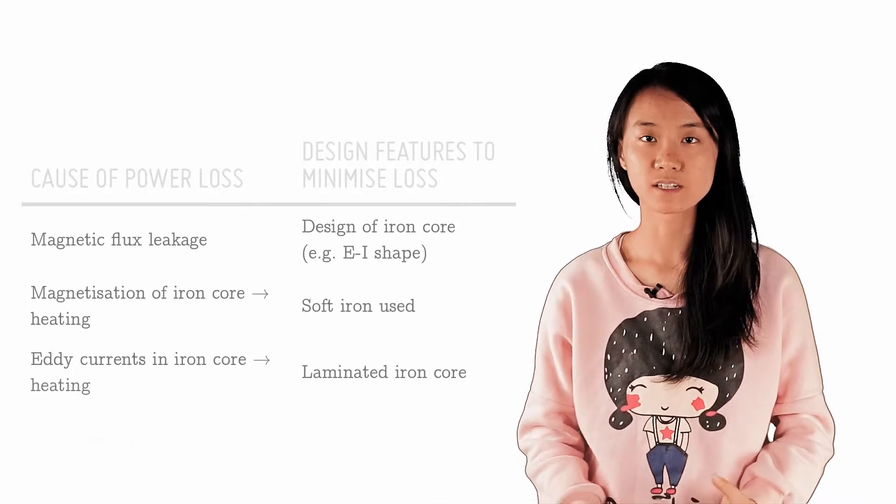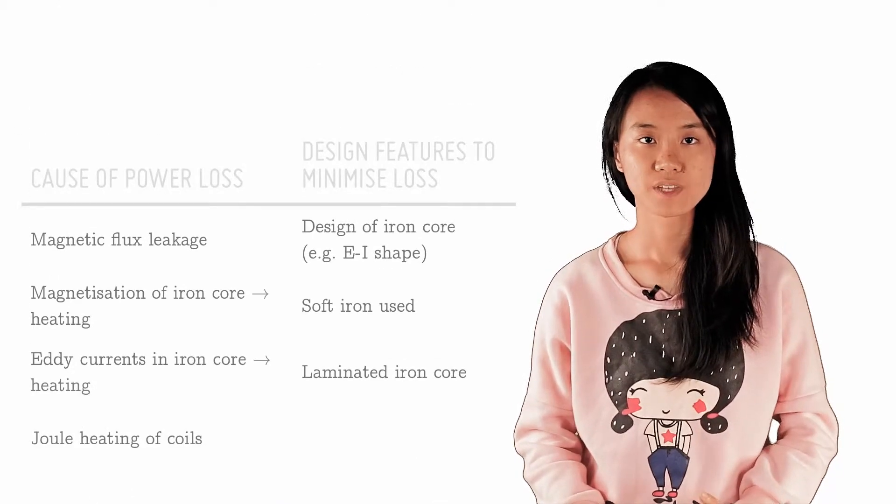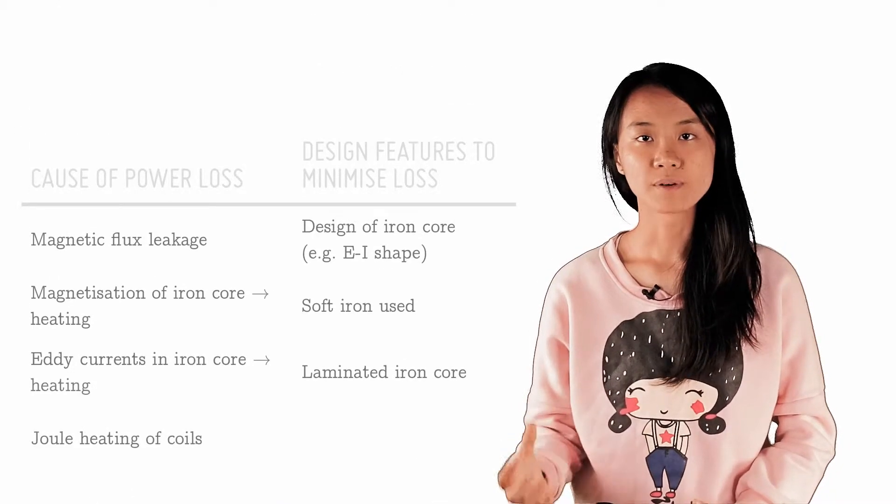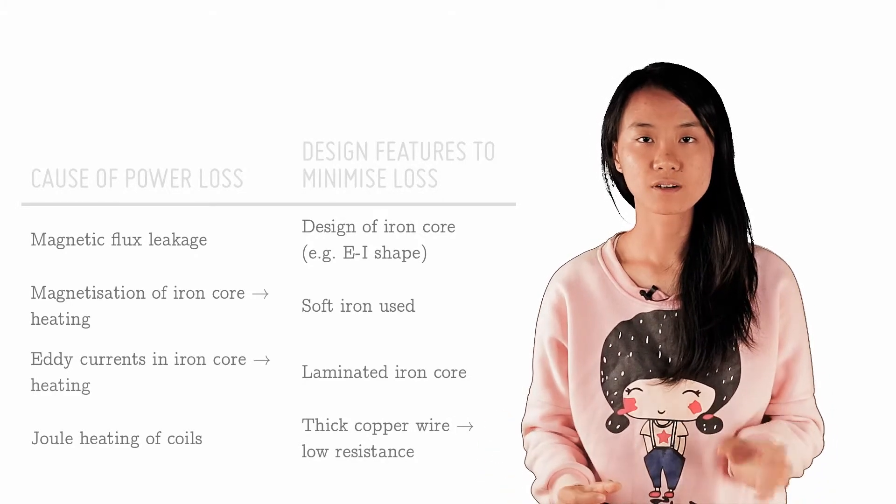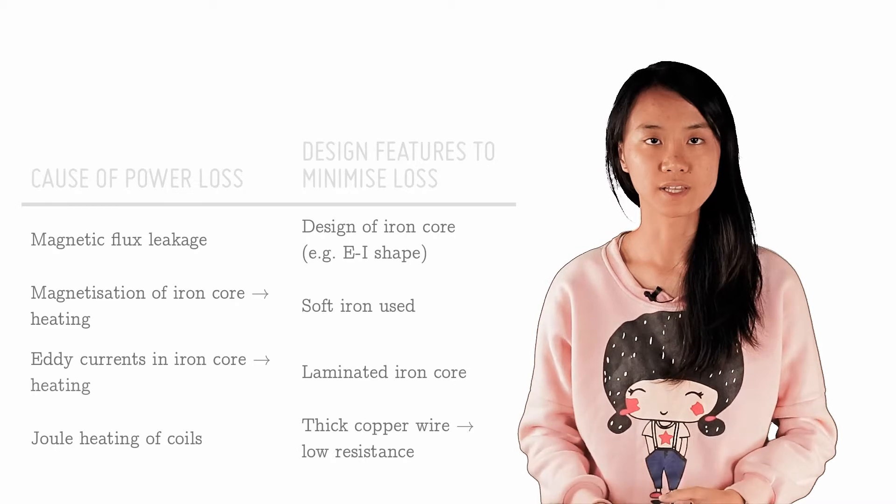And the last major cause of power loss is the heating effect of the currents in the copper wires of the coils. To reduce this, thick copper wires of low resistance are used, particularly for coils carrying high currents at low voltages.